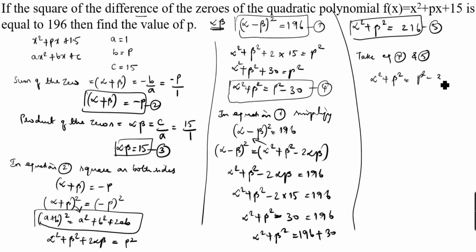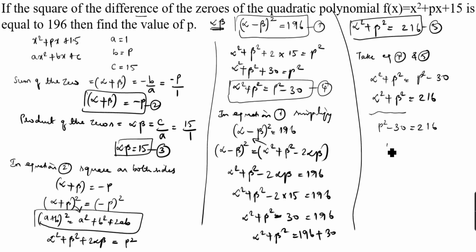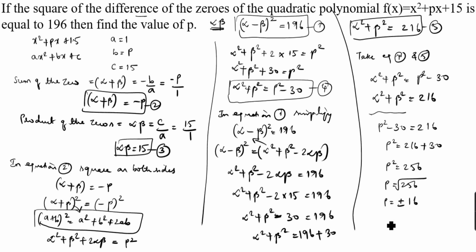From the fourth equation, alpha² + beta² = p² − 30, and from the fifth equation, alpha² + beta² = 226. Setting them equal: p² − 30 = 226, so p² = 256, and therefore p = ±16. So p = +16 or p = −16. This is the first method.